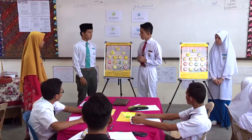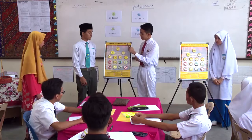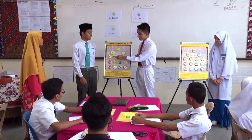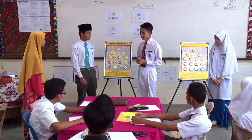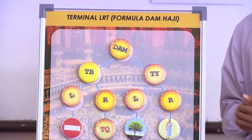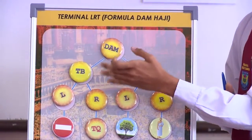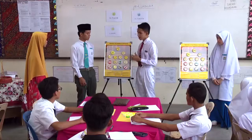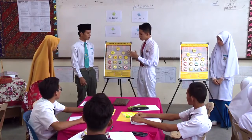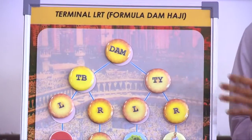Contohnya seperti yang diajar. Sekarang saya akan simpulkan tentang DUM, TBL, DUM TBR, TYL dan TYR. TBL ini seperti yang kita sudah maklum — Tertib. Kita bahagikan kepada dua: tertib tahyil dan tertib takbil. Yang kedua adalah tahyil — tertib dan tahyil takbil.